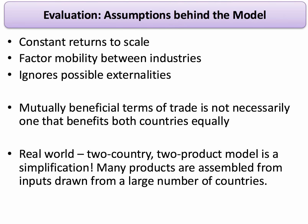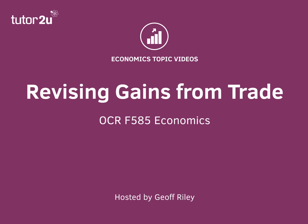Of course, the key is understanding the assumptions behind the model. We're assuming constant returns to scale — there might be diminishing returns, or the gains could be even bigger with increasing returns to scale (economies of scale). We're assuming labour and other resources are mobile between industries, so there's no risk of structural unemployment, which may not be the case. We're also ignoring possible externalities from trade, which can be both positive and negative. It's worth remembering that mutually beneficial terms of trade — in our case one for one — is not necessarily the same as terms that benefit both countries equally. In our example, Malawi gets most of the benefits at one for one. Keep in mind this has been a two-country, two-product model. The real world is much more complex: in a world of global supply chains such as the iPhone, many products are assembled from inputs drawn from tens of different countries. So the model has limitations, but it's still important for understanding the gains from trade.